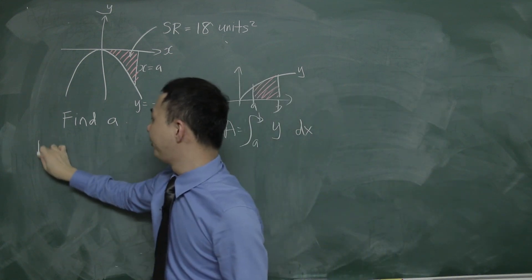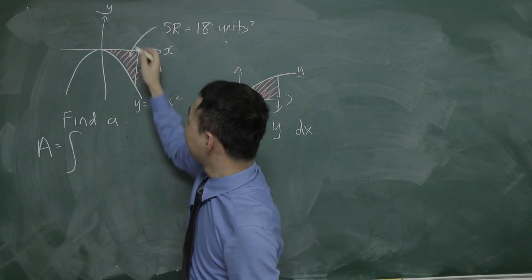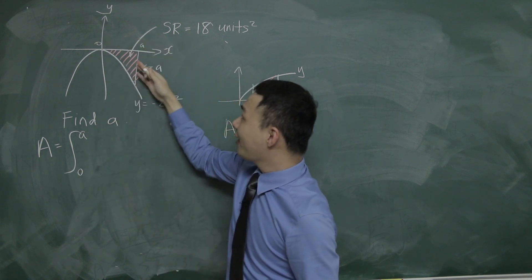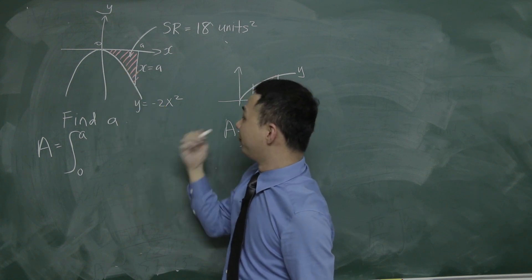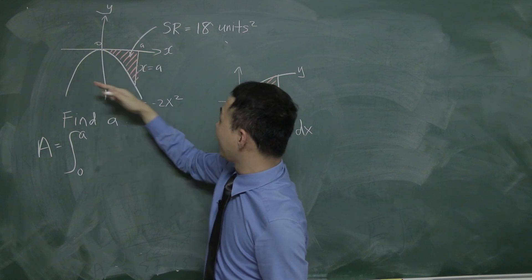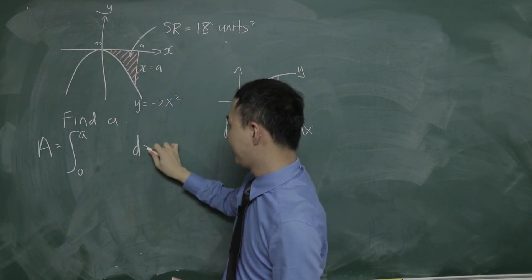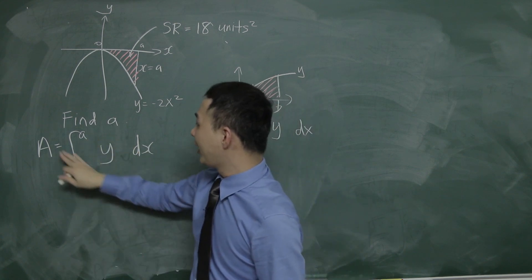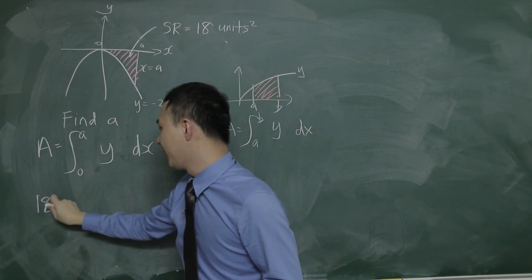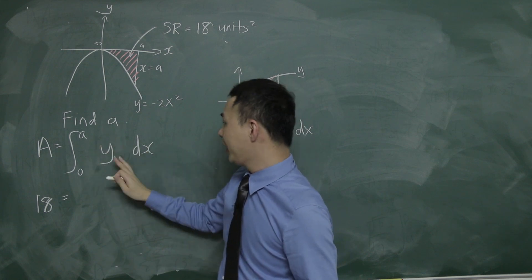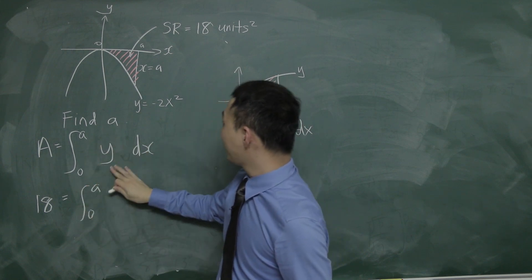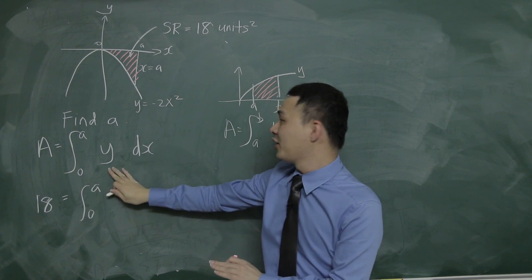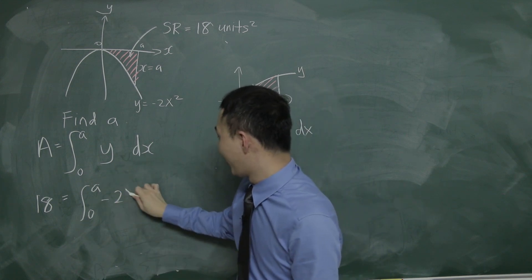So to find the area for the shaded region, I will integrate from 0 to a, since the region goes from 0 up to a along the x-axis. The area equals the integral from 0 to a of y dx, and we know the area is 18, so I plug in 18. Since dx means I need the integrand in terms of x, y becomes negative 2x squared, giving: 18 equals the integral from 0 to a of negative 2x squared dx.